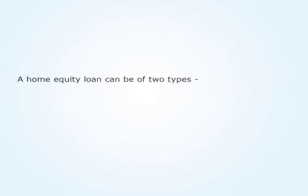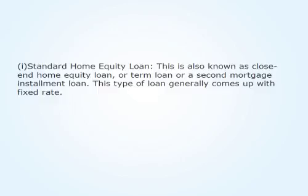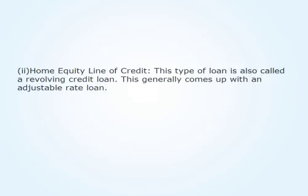A home equity loan can be of two types. First, the standard home equity loan, also known as a closed-end home equity loan, term loan, or second mortgage installment loan — this type of loan generally comes with a fixed rate. Second, the home equity line of credit, also called a revolving credit loan — this generally comes with an adjustable rate loan.